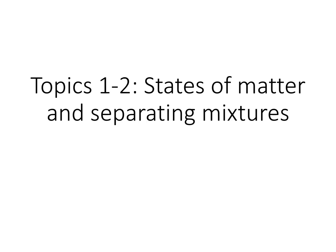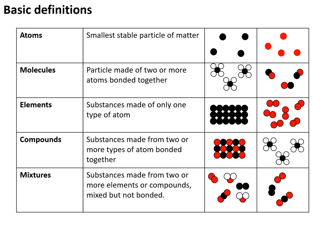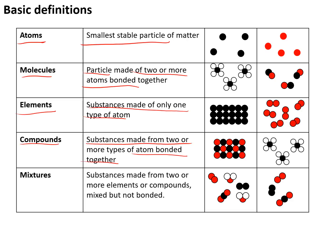Topics 1 to 2 cover states of matter and separating mixtures. In terms of basic definitions: atoms are the smallest stable particle of matter. Molecules are particles made of two or more atoms bonded together. Elements are substances made from only one type of atom. Compounds are substances made of two or more types of atom bonded together. And mixtures are made from two or more different substances — elements or compounds — that are mixed together but not bonded.